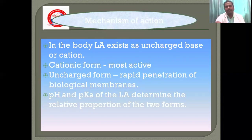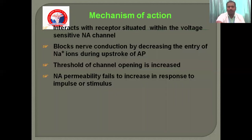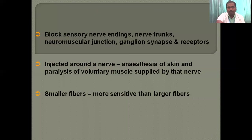Looking at the mechanism of action: local anaesthetics exist as an uncharged base or cation. The cationic form is the most active form, and the uncharged form allows the most rapid penetration of biological membranes. The pH and pKa of the local anaesthetic determine the relative proportion of these two forms. It interacts with receptors situated within the voltage-gated sodium channel, blocks nerve conduction by decreasing entry of sodium ions, increases the threshold of channel opening, and sodium permeability fails to increase in response to a stimulus. It blocks sensory nerve endings, nerve trunk, neuromuscular junction, ganglion synapse, and receptors. Injected around a nerve, it causes sensory and motor paralysis of the area served by that nerve. Smaller fibers are more sensitive than larger fibers.